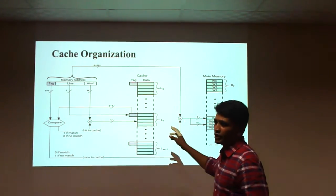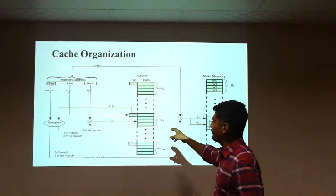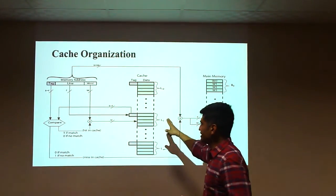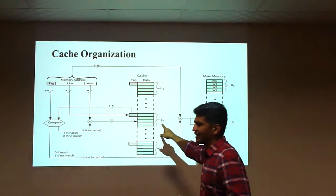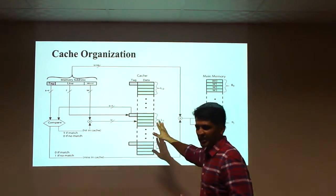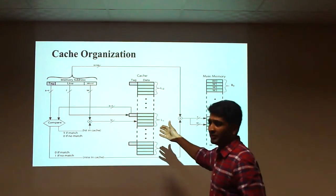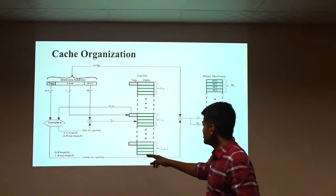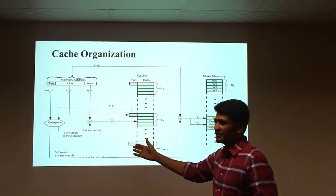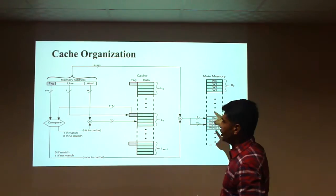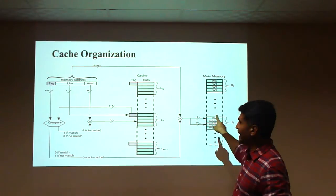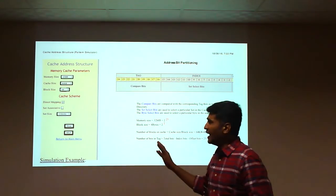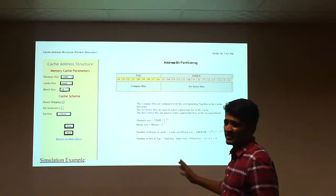The address components are used to identify data in the exact memory location. If a cache hit occurs, data is retrieved directly from the cache memory. If the data is not available in cache, a cache miss occurs and the data must be verified in the main memory.